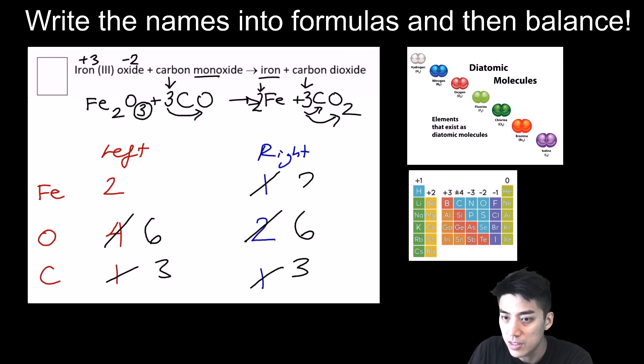The last thing to do is just place a 2 in front for the irons. So the sum of our coefficients is 1, 3, 2, 3, leaving us with a sum of 9 for this one.